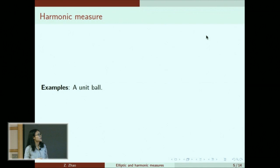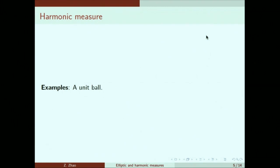Let me give you an example of a harmonic measure, which is just a unit ball. In that case, you can imagine that a Brownian traveler starting from the center is going to be equally distributed on the boundary.